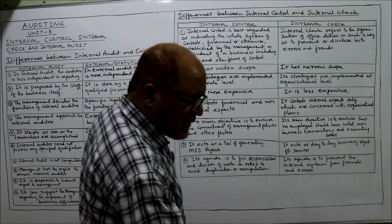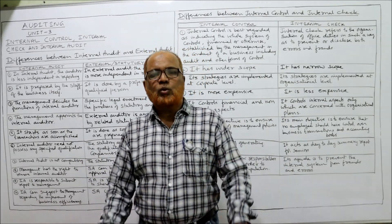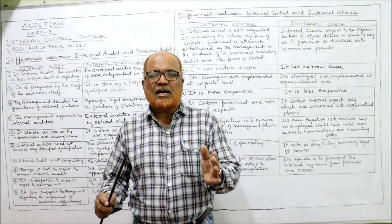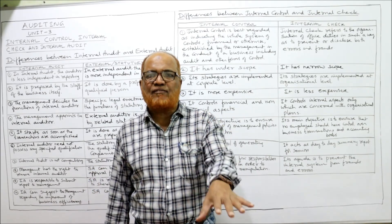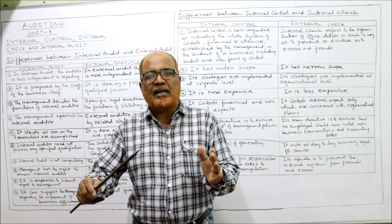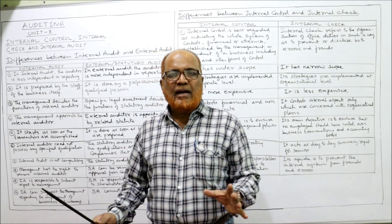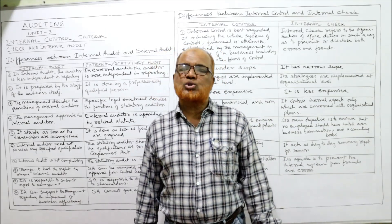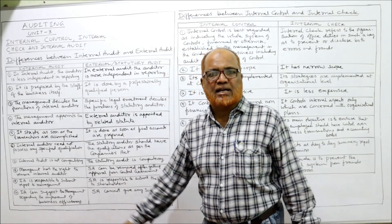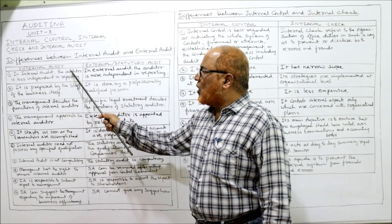Now I'm starting the differences between internal audit and external audit. Internal audit is the audit conducted within the organization by the staff of the organization as a service to the management. External audit is the audit conducted by an independent professional auditor — an outside auditor. In examinations, a question will frequently be asked: explain the differences between internal audit and external audit.